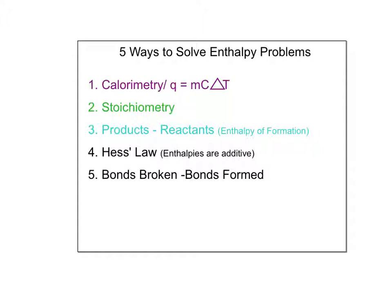Calorimetry, or q equals mc delta T, you're looking for two different temperatures, the word calorimeter, or a specific heat value given. Stoichiometry, hardest ones to figure out, but usually there's a mass or moles given with a balanced equation.